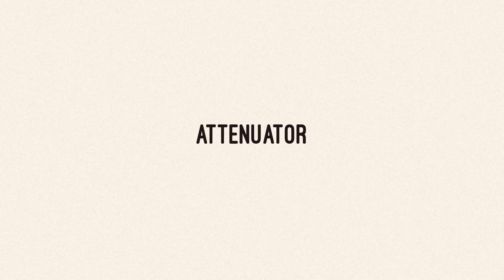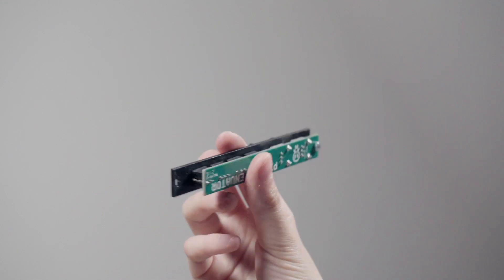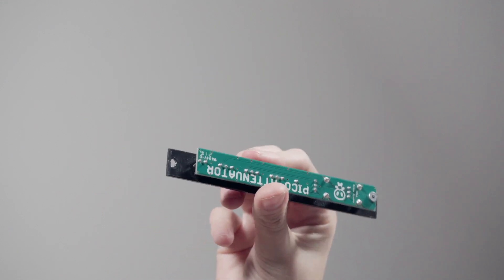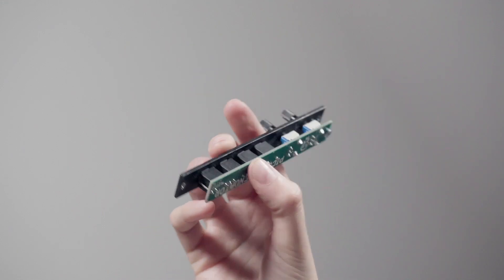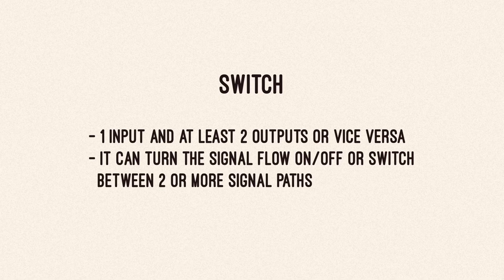An attenuator can reduce any intensity for any kind of signal — CV or audio. And a switch has one input and at least two outputs, or vice versa. It can turn the signal flow on and off, or you can switch between two or more signal paths.